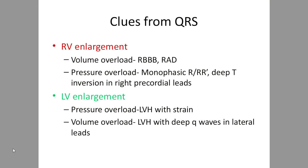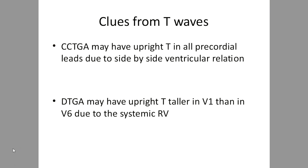From QRS analysis: RV volume overload tends to cause right bundle branch block and right axis deviation, while RV pressure overload gives a monophasic R or notched R' with deep T inversions in right precordial leads. Check the R/S ratio appropriate for age. LV pressure overload manifests as LVH with strain, as in aortic stenosis. LV volume overload manifests as a deep Q wave in lateral leads V5 and V6 with LVH. In corrected transposition, T-waves may be upright in all recorded leads due to side-by-side ventricular relations. In D-TGA, a tall upright T in V1 may be taller than in left-sided leads.